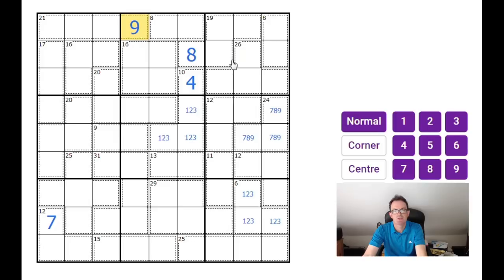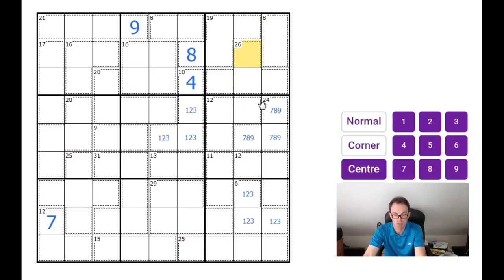This 9 is a bit interesting because the 9 can't go in the 19 cage anymore because the 19 cage already contains an 8, so 8 plus 9 is 17. We can't have two more digits in the 19 cage. The 9 obviously can't go in the 8 cage, so there is a 9 in this 26 cage, and I'm going to make note of that. And I guess the other thing is this 8 cage, or this 8 in the 19 cage, means there must be an 8 in this 26 box as well.